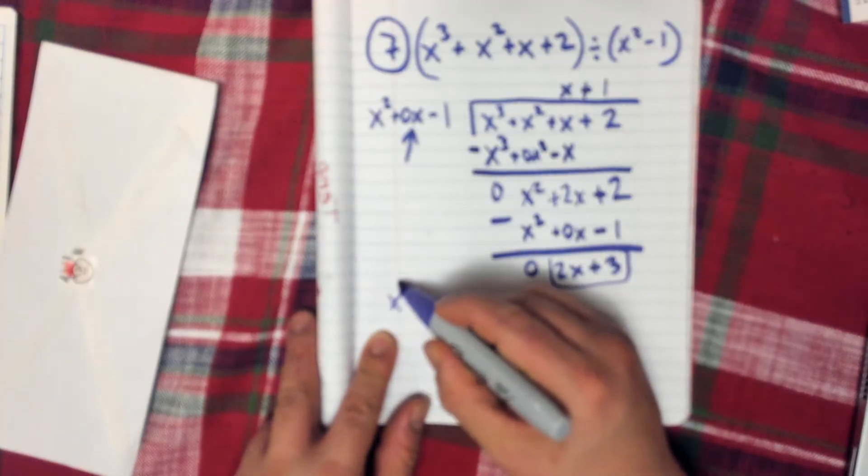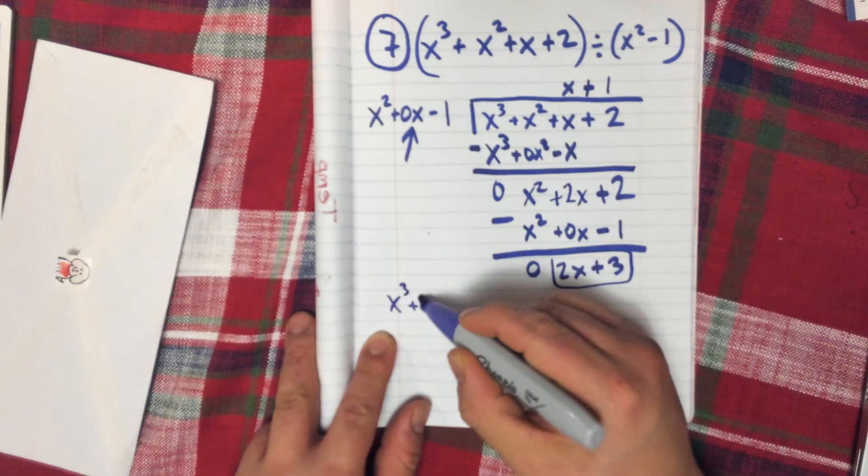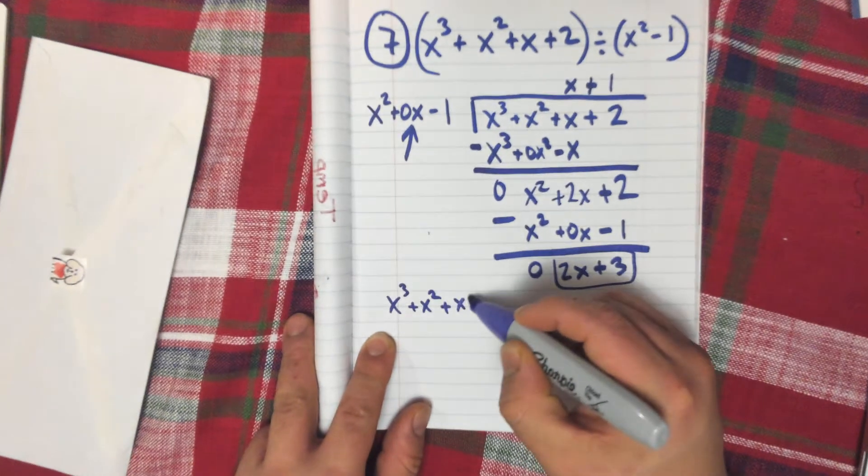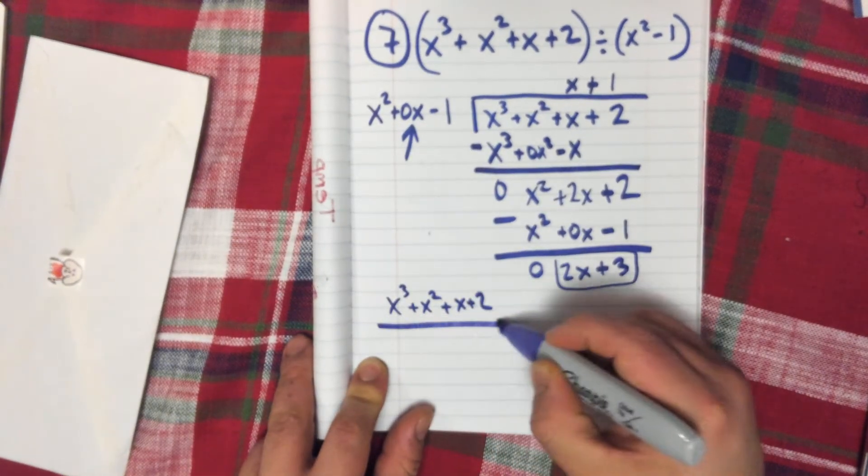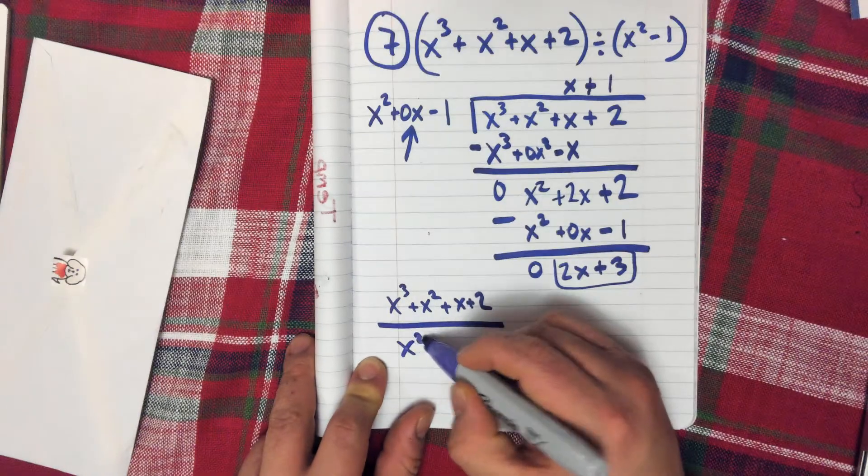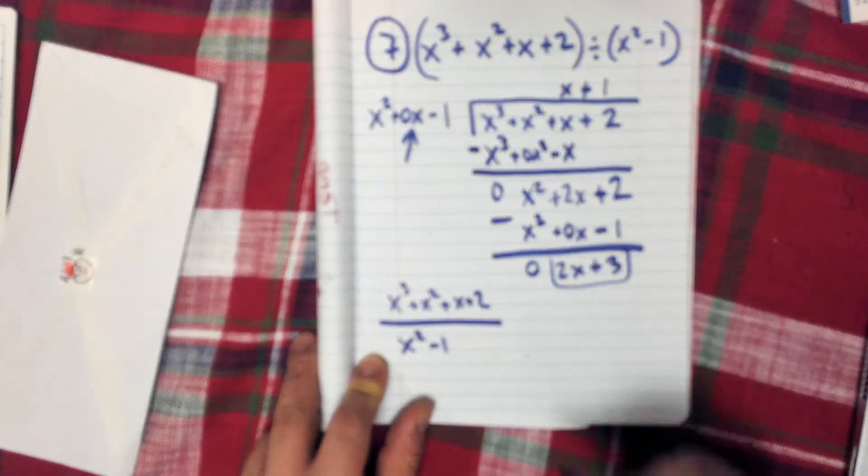x cubed plus x squared plus x plus 2 divided by x squared minus 1 is going to equal